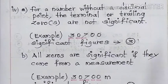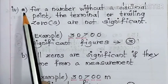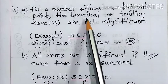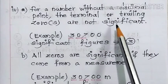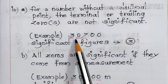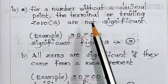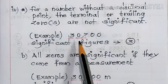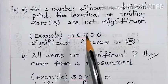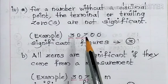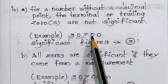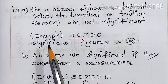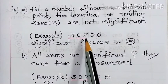Fourth point, part A: for a number without a decimal point, the terminal or trailing zeros are not significant. Using the same number 30700 but without a decimal point at the end, the trailing zeros are not significant. So the number of significant figures in this case is only three: one, two, three.